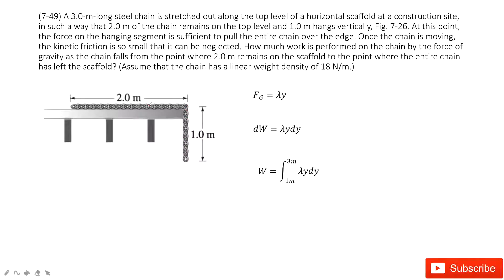Now we can see, after we release it, this chain will move down. This 2 meters will move down, and then finally at this part. The question asks: how much work is performed on the chain by the force of gravity, as the chain falls from the point of 2 meters on the end to the point where the entire chain has left the table?